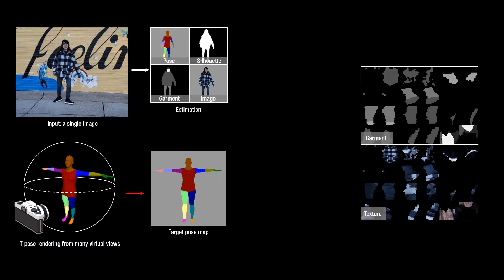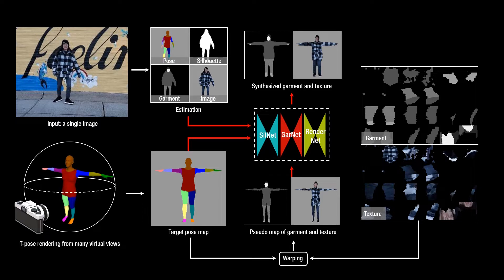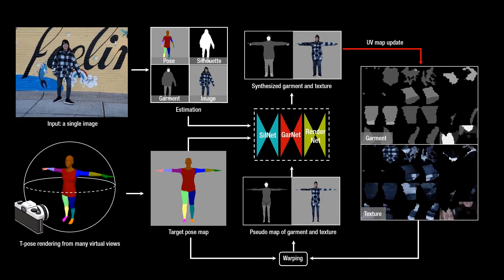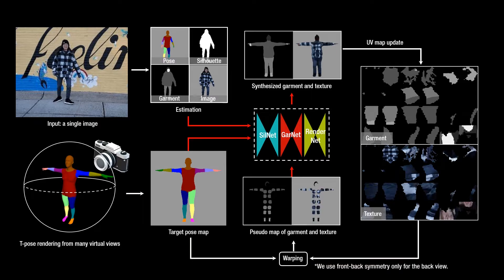For example, from the frontal view we render a T-pose map, and then we produce the pseudo-images by warping the pixels from the UV maps. Our pose transfer network predicts the garment labels and person image, and they are combined in coherent UV coordinates. We iterate this process for six virtual viewpoints, and for the back view only, we apply the front-back symmetry assumption.